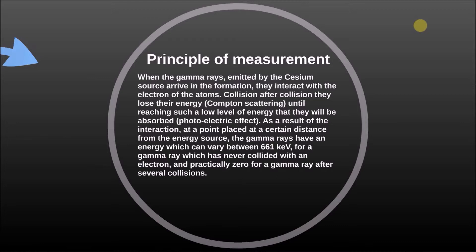Photoelectric effect: As a result of the interaction at a point placed at a certain distance from the energy source, the gamma rays have an energy which can vary between 661 keV for a gamma ray which has never collided with an electron and practically zero for a gamma ray after several collisions.